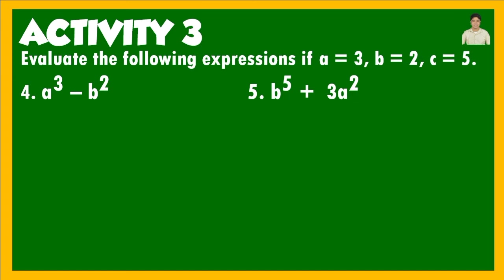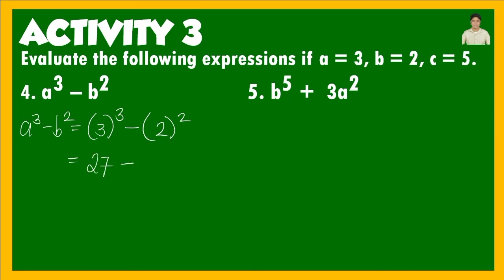For number 4, a cubed minus b squared. Substituting: a=3 and b=2, so this becomes 3 to the third power minus 2 squared. 3 cubed is 3 times 3 times 3 — 3×3=9, ×3=27. 2 squared is 2 times 2, which is 4. So 27 minus 4 equals 23. Therefore, a cubed minus b squared equals 23.